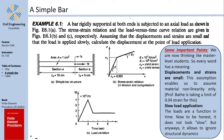If you are new to this channel, please note that this is part of a video series called Nonlinear Analysis in the Finite Element Method. So, the simplest example you can have: I have a simple bar — an axial element — which is loaded by something called R. There are two pieces: section B on the right side, and section A on the left side.